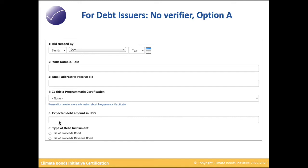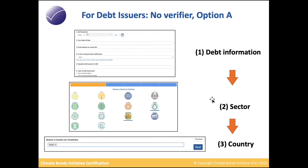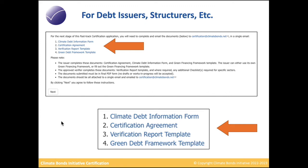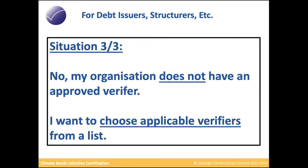In this case, you'll provide some information about the debt instrument — for example, what type of instrument it is, when you'll need the expression of interest by, and your email address. Based on the sector (solar) and country (Brazil) you provided, you'll receive the documents you need, and in the background verifiers will be emailed your information and will contact you at their own discretion with expressions of interest.